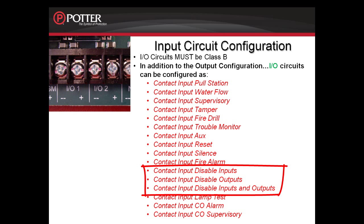Disable inputs, disable outputs, and disable inputs and outputs are used for monitoring a key switch or switch that when activated would disable the inputs assigned to the same software zone as the I/O circuit, or disable the outputs assigned to the same software zone as the I/O circuit, or disable both inputs and outputs in that same software zone. For information on programming that type of functionality, please refer to the recorded module on input and output disabling functionality.